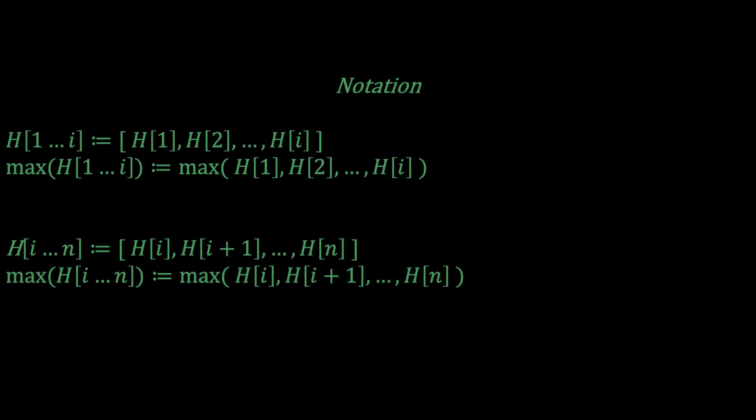Okay, great. Now I want to define some notation that would make it a bit easier to describe this algorithm. I'm going to use H[1:i] to denote the sub-array of the elevation map H from index 1 to i. So this includes element H[1], H[2] all the way to H[i]. I'm also going to denote maximum of H[1:i] as the maximum of H[1], H[2] all the way to H[i].